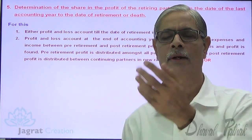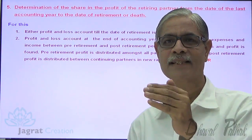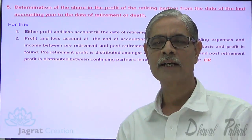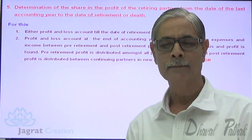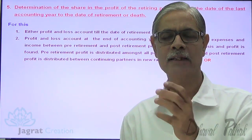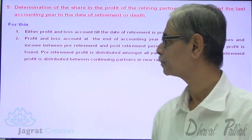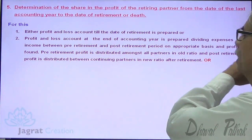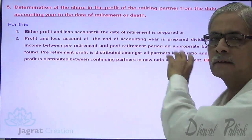Whatever expenses are debited to the profit and loss account, bifurcate those expenses into pre-retirement and post-retirement periods. This bifurcation has to be done on any appropriate basis: time-based expenses will be distributed in proportion of time, sales-based expenses in proportion of sales, and other expenses on an appropriate basis. Pre-retirement profit is distributed amongst all partners in the old ratio, and post-retirement profit is distributed between the continuing partners in the new ratio after retirement. This is the second option.